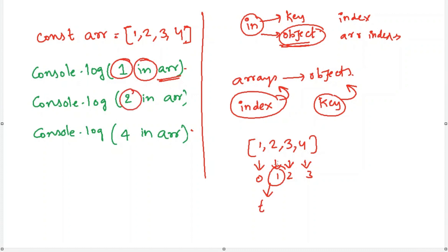2 is present in this. Yes, it is there. It will return true. 4 is present here. No, 4 is not there. So it will return false.